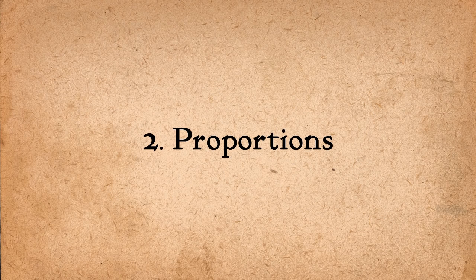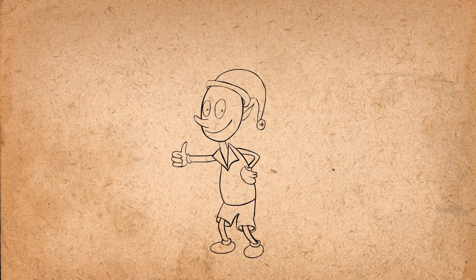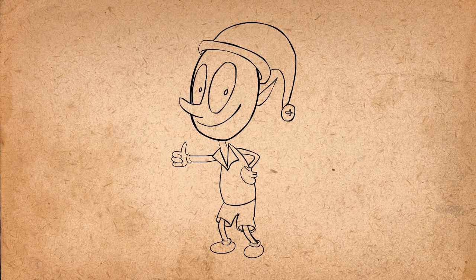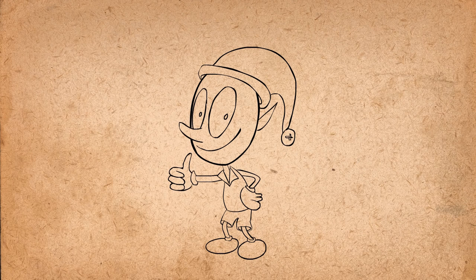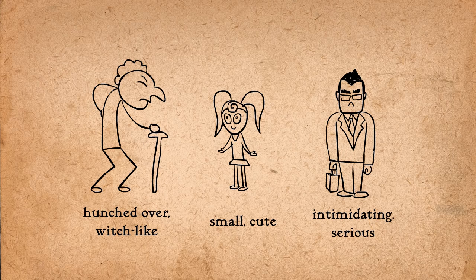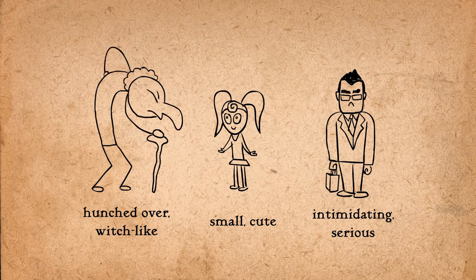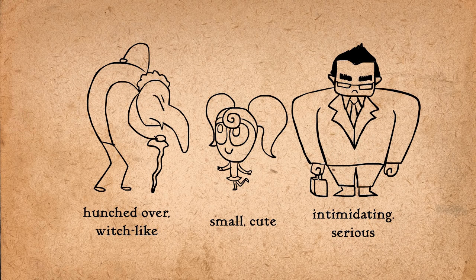Second, play with proportions. Cartoonists often magnify the things we find interesting and shrink the things we might find ugly or boring. For example, they might enlarge the head and eyes, shrink the body, and make the hands larger. Finding the aspect of a character that defines his or her personality and blowing it up can often create a more appealing design.